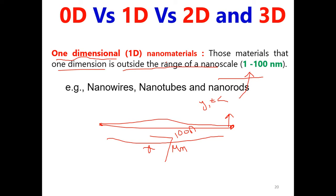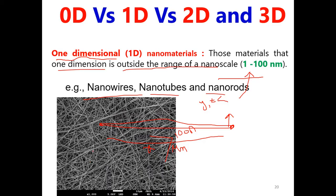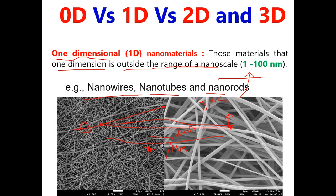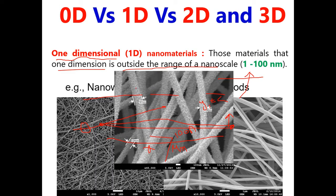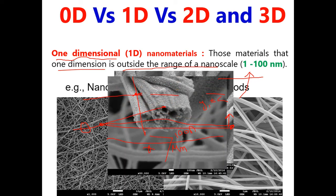This class of material we call one-dimensional, such as nanowires and nanotubes. This wire is very, very lengthy — one dimension is out of the bound of the nanoscale. But the two remaining dimensions are well below the nanoscale. If you measure the diameter from the center, it is well below 100 nanometers, but the length is very, very long. This means one dimension is out of the nanoscale, and similarly for nanotubes.